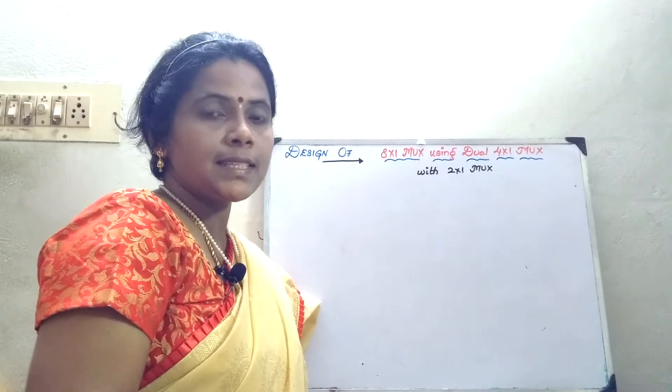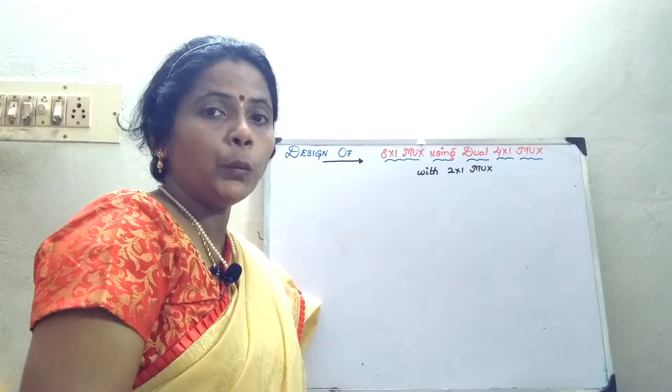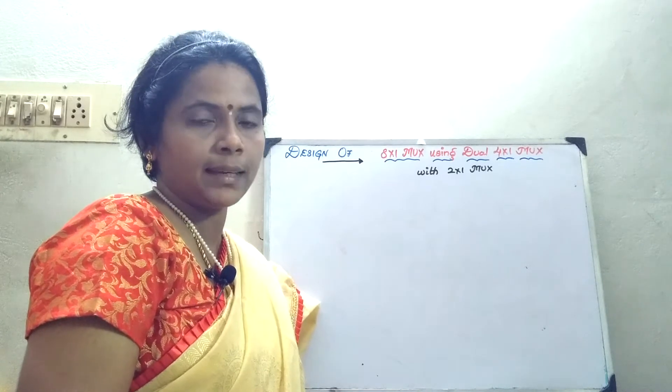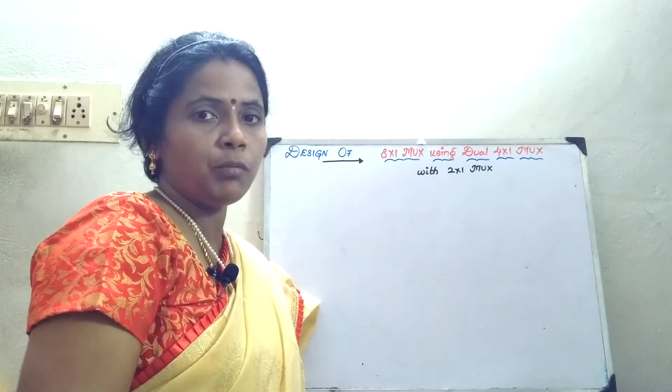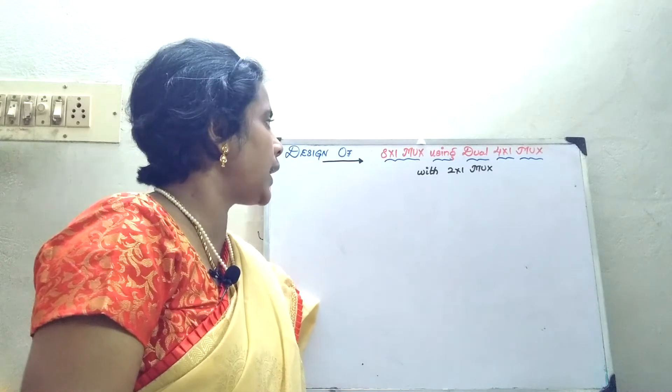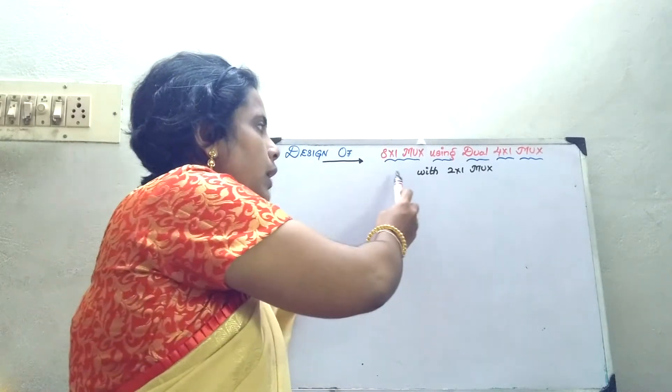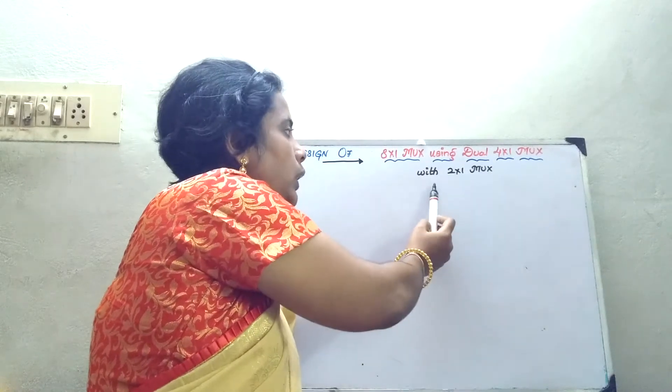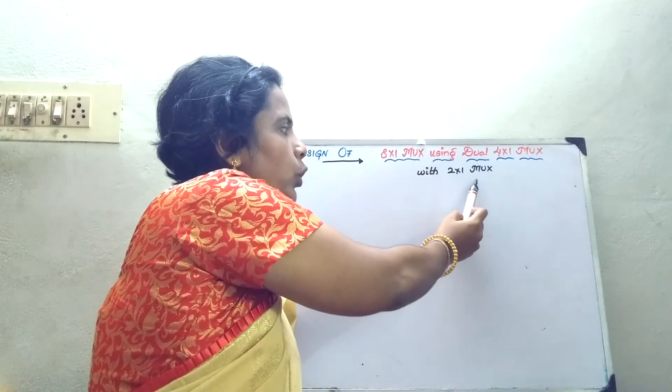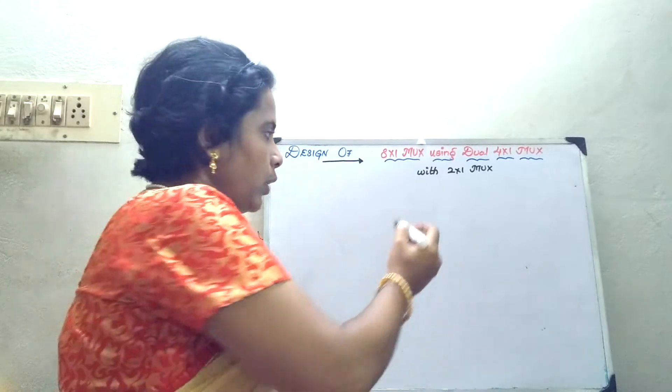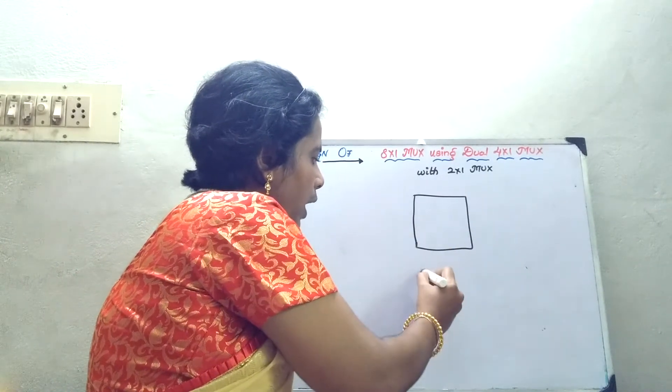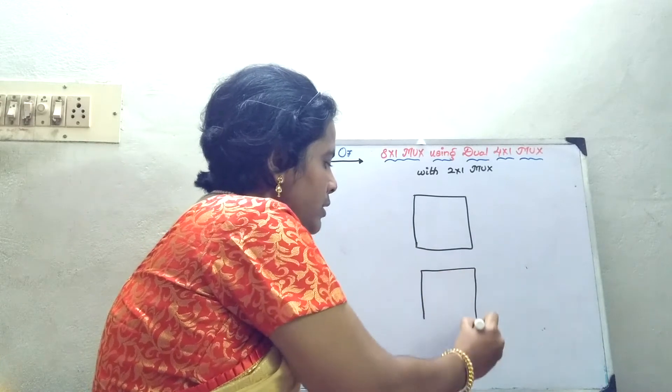In the earlier session, we have seen how to design a quad 2 cross 1 multiplexer. In today's session, we will see how to design an 8 cross 1 mux using dual 4 cross 1 mux with the incorporation of 2 cross 1 mux. First we will take the, we will just draw it by using submodules.